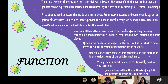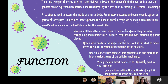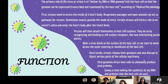Viruses will then attach themselves to host cell surfaces. They do so by recognizing and binding to cell surface receptors, like two interlocking puzzle pieces. After a virus binds to the surface of the host cells, it can start to move across the outer covering of the membrane of the host cell. Once inside, the viruses release their genomes and also disrupt or hijack various parts of the cellular machinery. Viral genomes direct host cells to ultimately produce viral proteins, and many times halt the synthesis of RNA and proteins that the host cells can use.